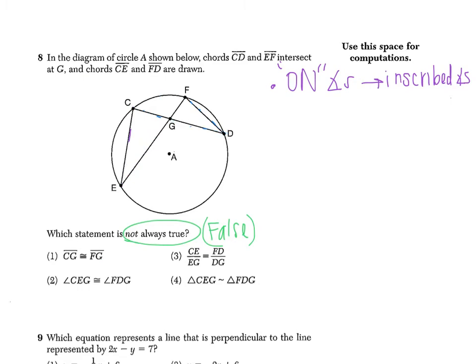So based on this, I would know that angle E is congruent to angle G. Or I'm sorry, D. Angle E is congruent to angle D. And again, that's because inscribed angles are congruent when they intersect the same arc.